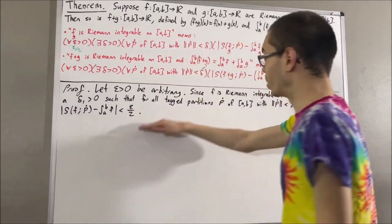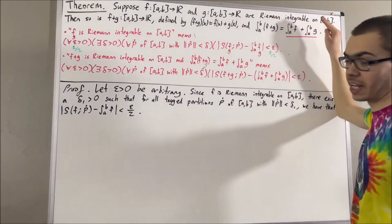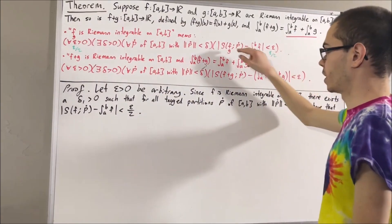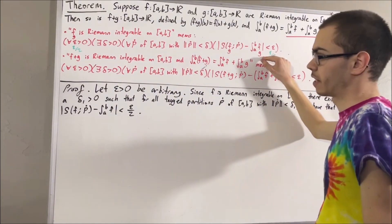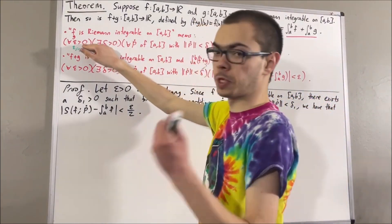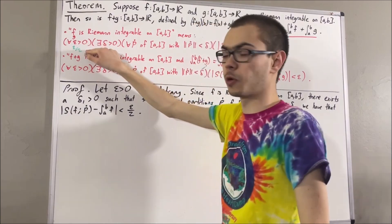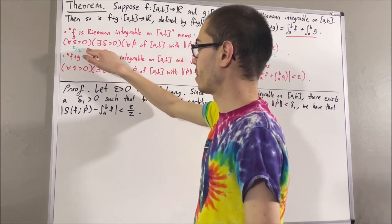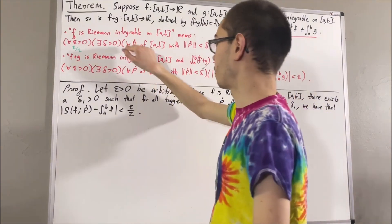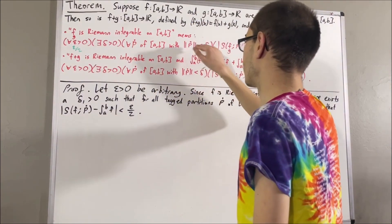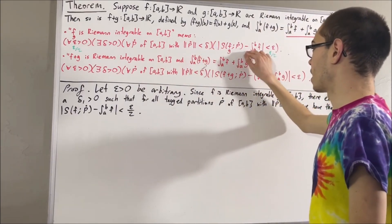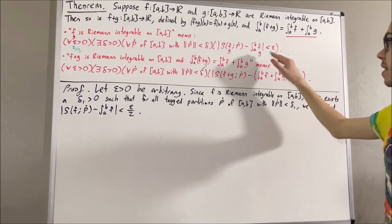Similarly, since g is Riemann integrable on [a, b], the same statement holds for g. Taking ε/2 again, there exists a positive real number δ₂ such that for all tagged partitions p of [a, b] whose norm is less than δ₂, the absolute value of the Riemann sum of g minus the integral of g is less than ε/2.